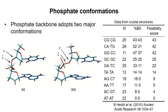This table shows what they found. The N column represents how many of that type of dinucleotide they observed in the data set, and the %B2 column represents what percentage of each backbone was in the B2 conformation. For example, for the C-A-T-G dinucleotide, 52% of the time the backbone between the C and the A was in the B2 conformation, and the backbone between the T and the G was in the B2 conformation 31% of the time.